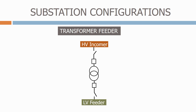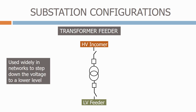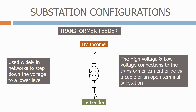The first type is a transformer feeder. This is a very simple circuit with a high voltage incomer, a transformer to step the voltage down, and a low voltage feeder. These are used widely in networks to step down the voltage to a lower level. The high voltage and low voltage connections to the transformer can either be via a cable or an open terminal substation.